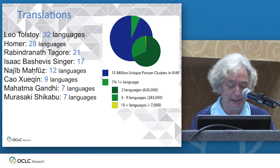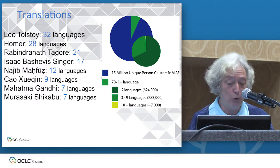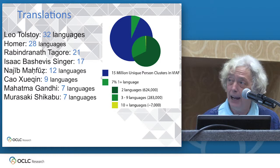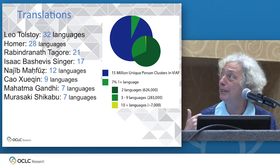This represents the short head of works that have the most impact on readers worldwide. I've listed here a few sample authors of classics and Nobel Prize laureates for literature, and the number of languages their works have been translated into as represented in WorldCat.